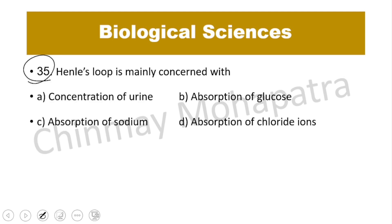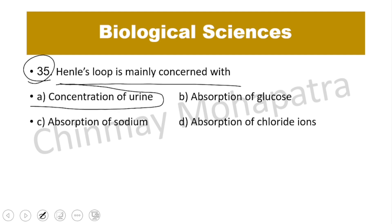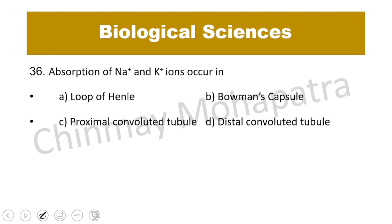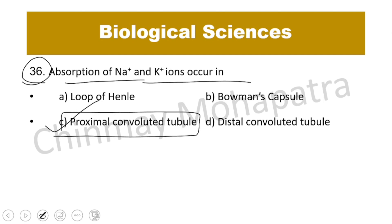Question number 35: The loop of Henle is mainly concerned with concentration of urine. Question number 36: Absorption of sodium and potassium ions occurs in the proximal convoluted tubule. The right answer is C — reabsorption.